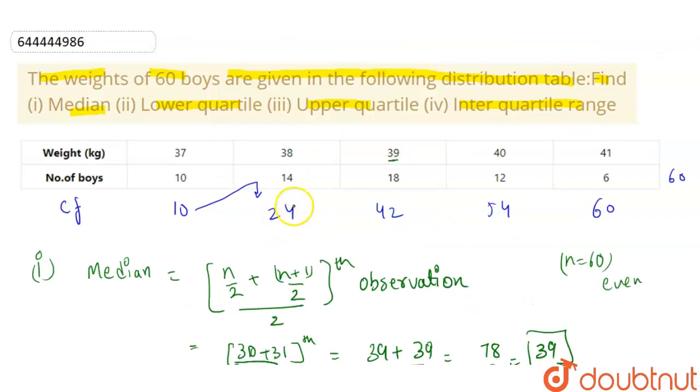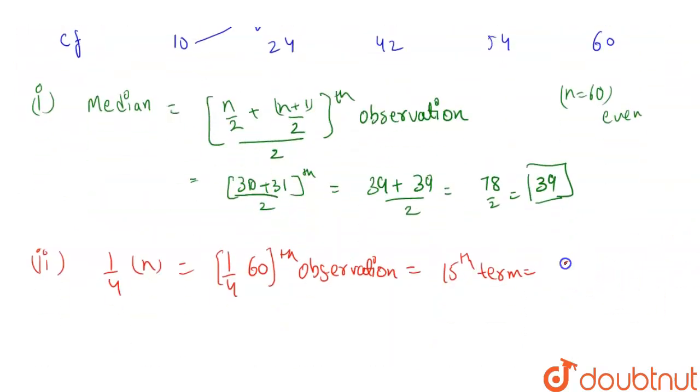So this becomes 1 by 4th of 60th observation, that means 15th term. So number greater than 15 is 24. So our corresponding class is 38, that means 38 is our answer for 15th term.